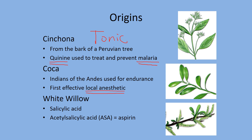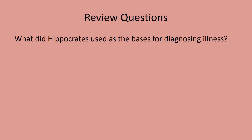The white willow — from it we were able to extract salicylic acid. Today we synthesize acetylsalicylic acid, abbreviated ASA, better known as aspirin. Review question: what did Hippocrates use as the basis for diagnosing illnesses?